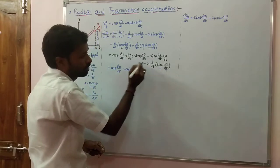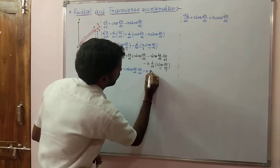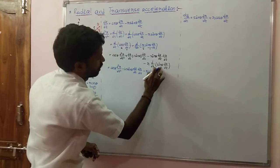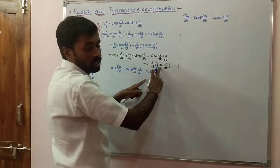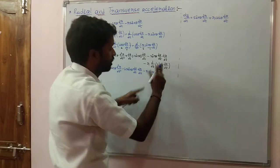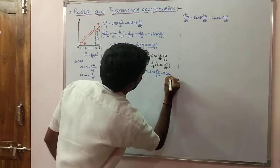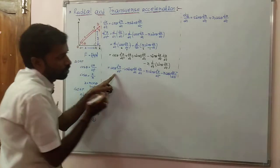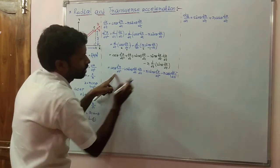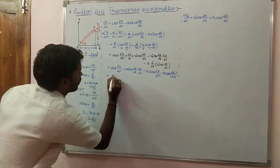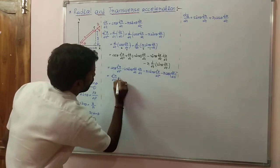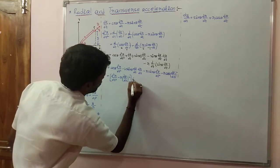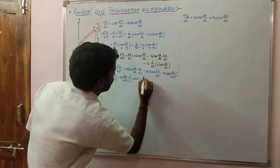Applying the uv formula to the r term, we get minus r sin theta into the derivative of d theta/dt, giving d²theta/dt², plus cos theta times theta derivative of d theta/dt, giving r cos theta into (d theta/dt)². Now collecting terms by cos theta and sin theta, we write: d²r/dt² minus r(d theta/dt)² into cos theta, combined with the remaining terms.